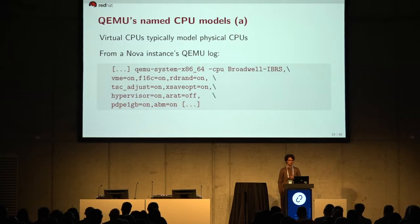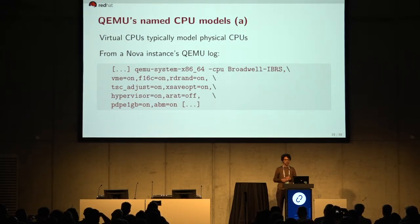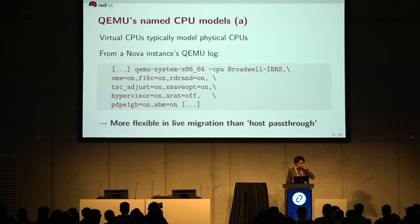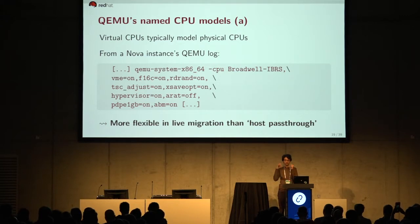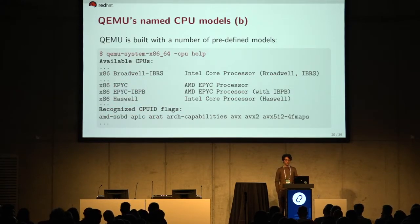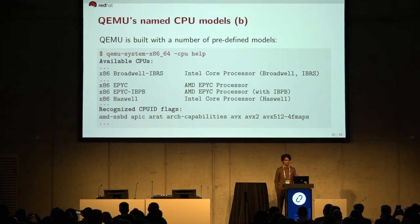The second type is plain named CPU models — vendor-specific models named after particular processor generations released by Intel, AMD, and others. These are a bit more flexible for live migration than host pass-through, because you can prepare a custom CPU model and feature flags so you can have migration compatibility across a disparate set of hosts. QEMU comes with built-in default and custom CPU models, and libvirt also exposes these via its own XML representation.